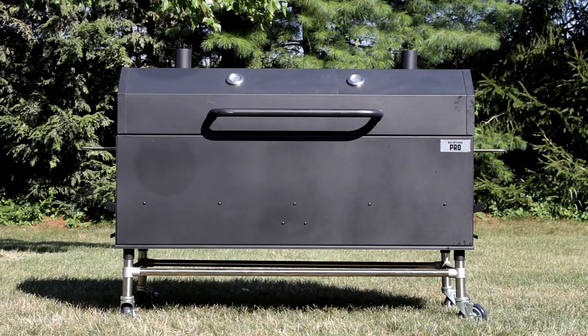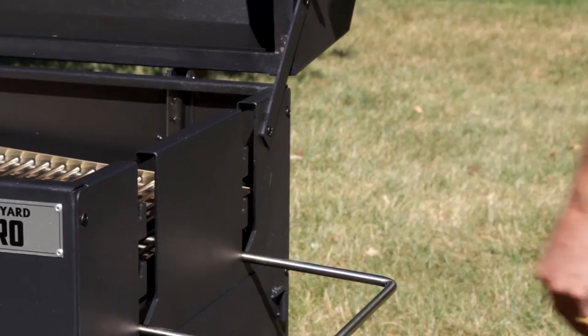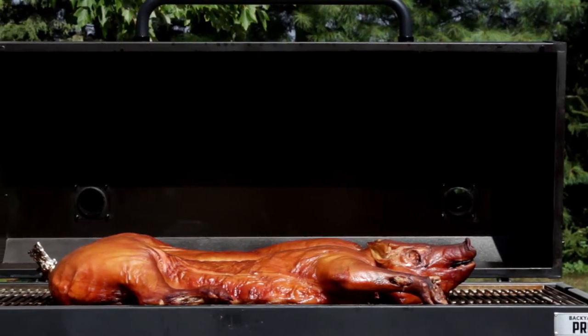The Backyard Pro 60-inch Wood Smoker has three adjustable cooking grate heights to accommodate different heat levels. It's great for barbecuing different kinds of meat or even an entire pig roast.